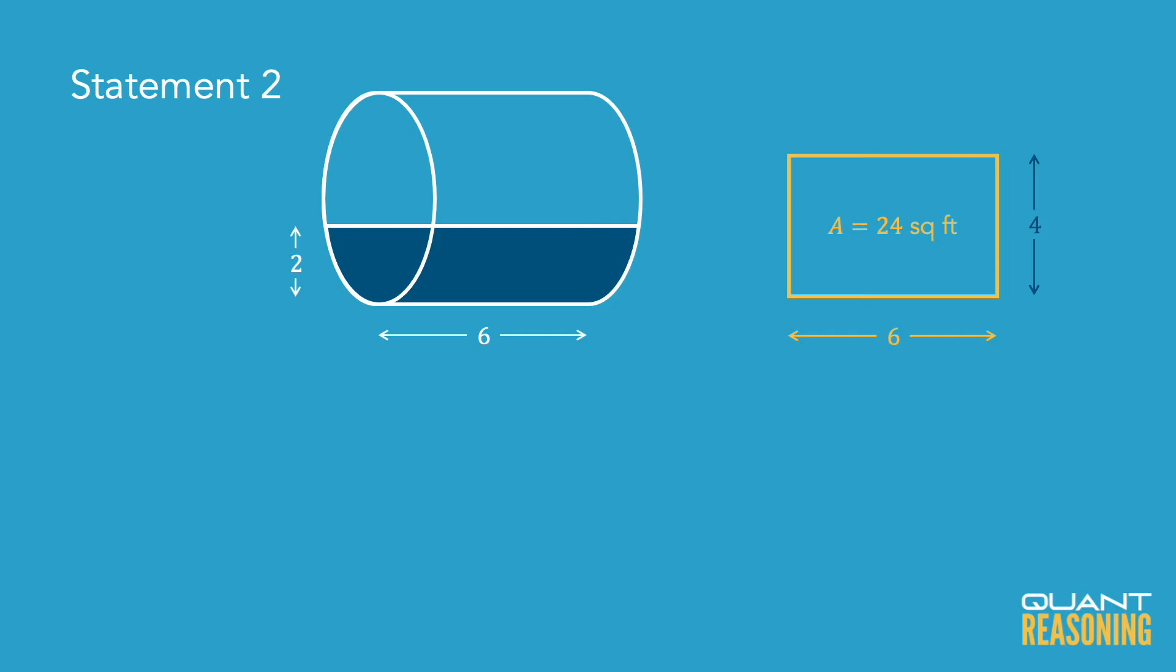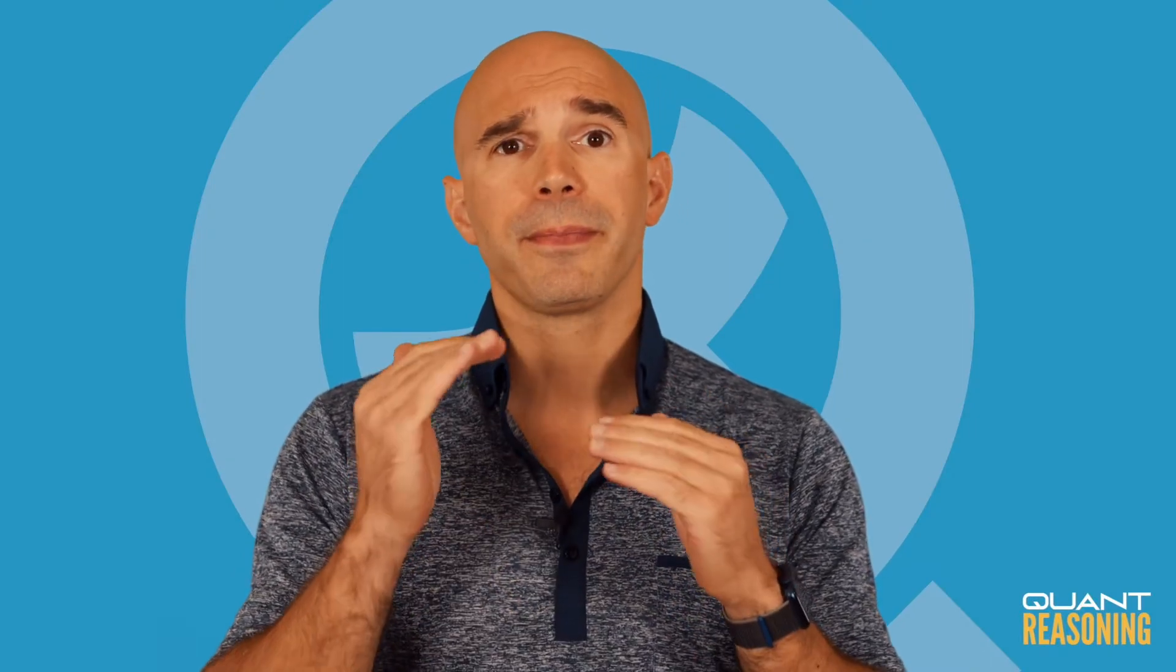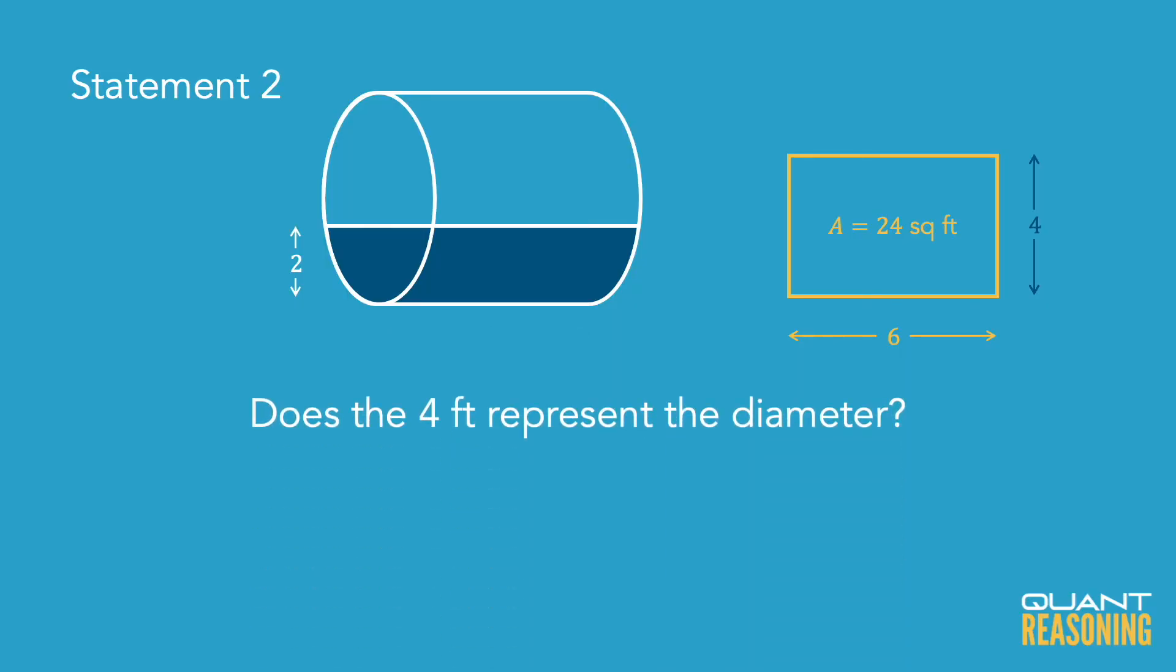And what we need to figure out is, does this statement on its own essentially imply the same thing that statement one told us, right? Statement one said essentially the gasoline takes up exactly half the volume of the cylinder. Can we make that same inference from statement two on its own? And here's how I would go about doing this. I would say, look, if these four feet that are the width of the top surface of the gasoline, if those four feet represent the diameter of the cylinder, then yes, it's saying the same thing as statement one.